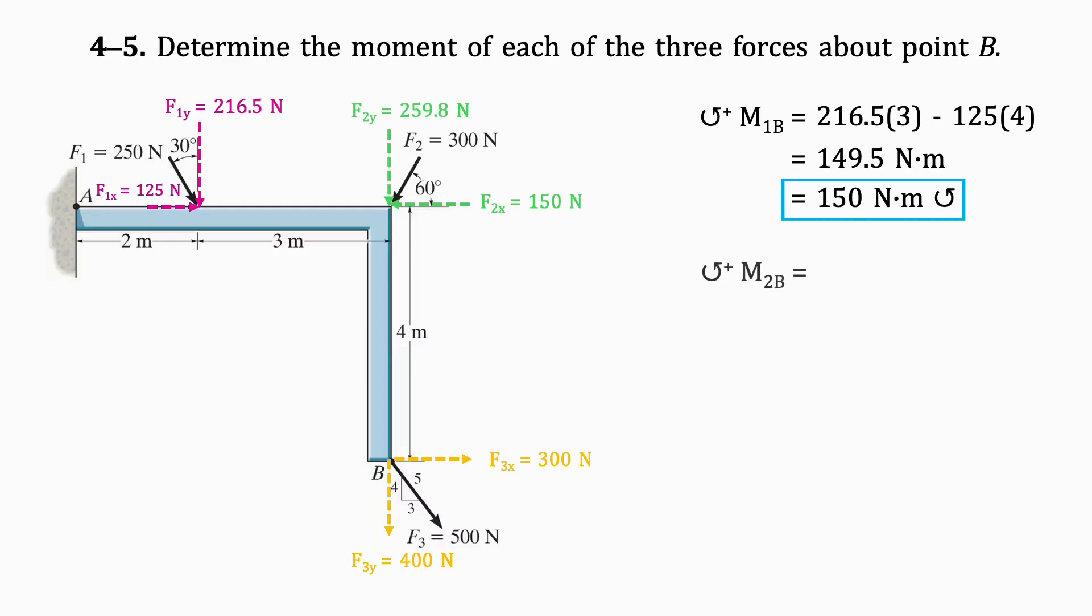To find the moment of F2 about B, we will only consider its X component, since the line of action of the Y component passes through point B and therefore will not generate a moment. Multiplying the X component of the force by its distance from B, which is 4 meters, we get 600 Newton-meters in the counter-clockwise direction.